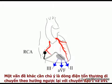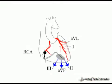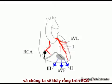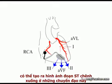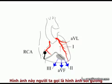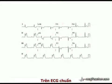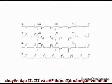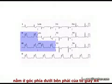Note also that the injury current is moving directly away from leads 1 and AVL. As we'll see shortly on the ECG, this can produce ST depression in these leads — so called reciprocal change. On a standard ECG, the recordings from leads 2, 3 and AVF are grouped together in the bottom right hand corner of the A4 readout.